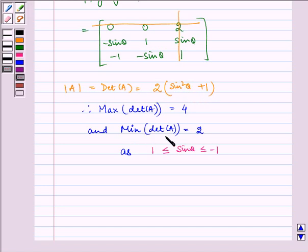And if the value of sin²θ is 0, then the value of determinant A will be 2. So minimum of determinant A is equal to 2, as sin θ lies between -1 and 1.